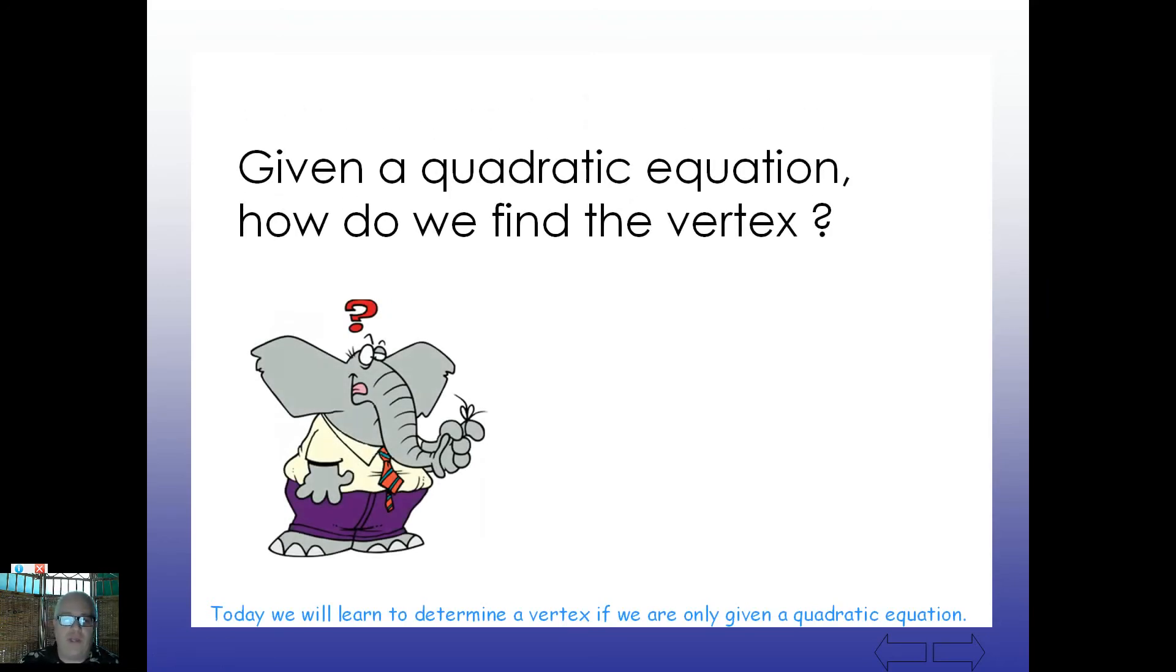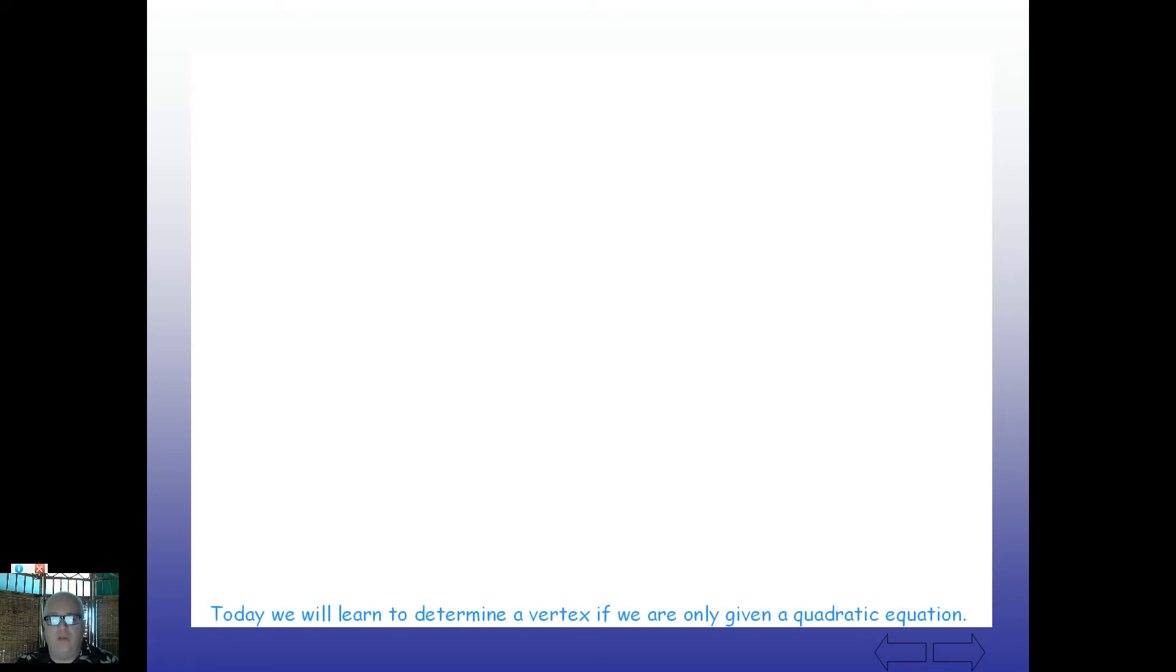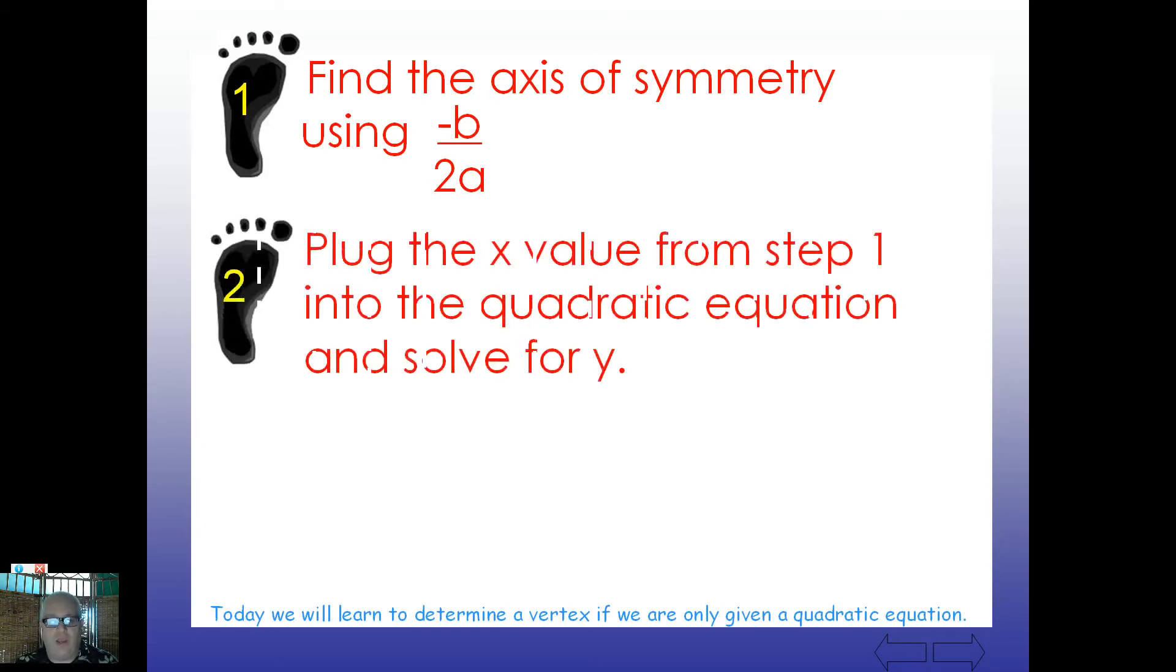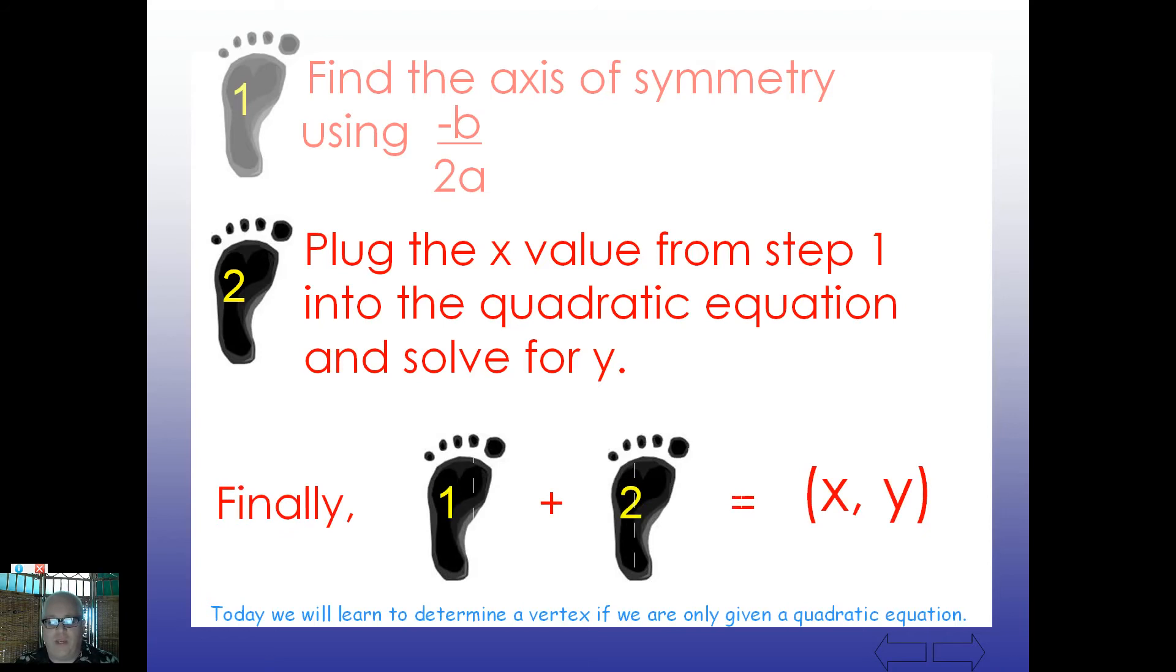So, given a quadratic equation, how do we find the vertex? Let's take a look here. First step: find the axis of symmetry using negative b over 2a. Step two: plug the x value from step one into the quadratic equation and solve for y. Finally, step one and step two make up your ordered pair. One value for x, the next value for y.